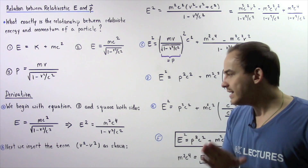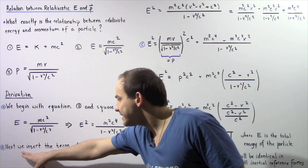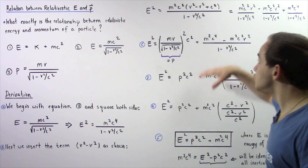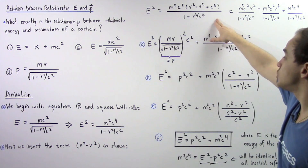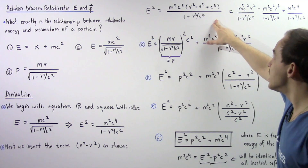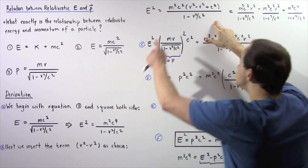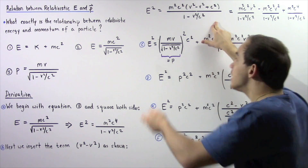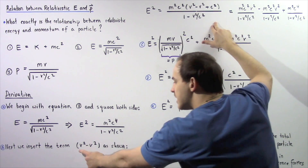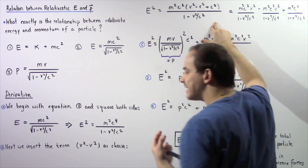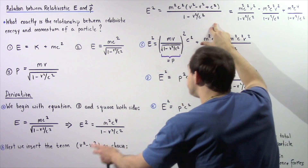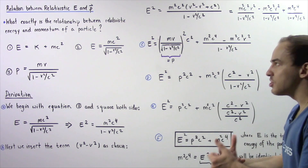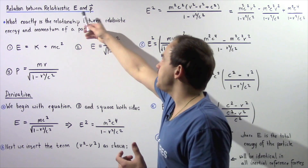In step two, we insert the term v squared minus v squared into the equation. This doesn't change the quantity because v squared minus v squared is zero. We do this because it will become important in building the relationship between p and E.